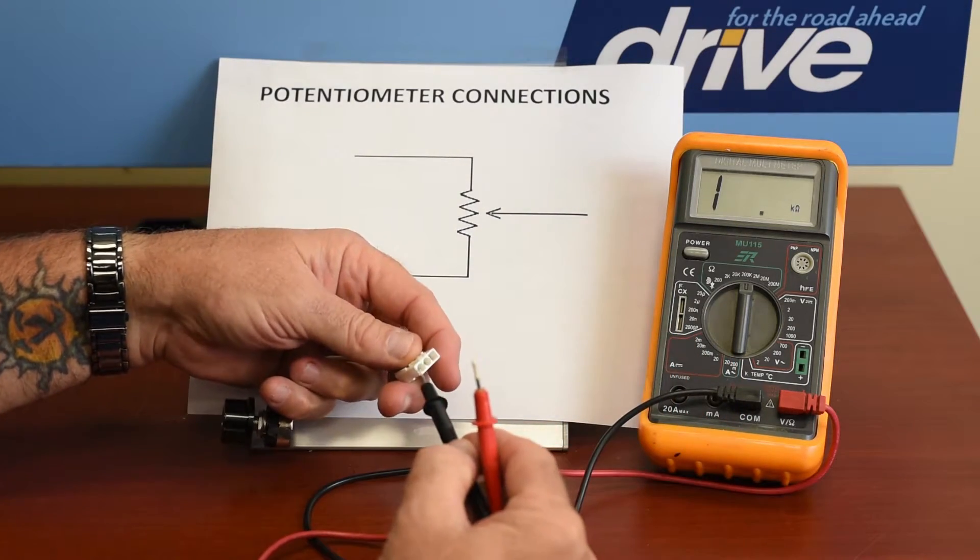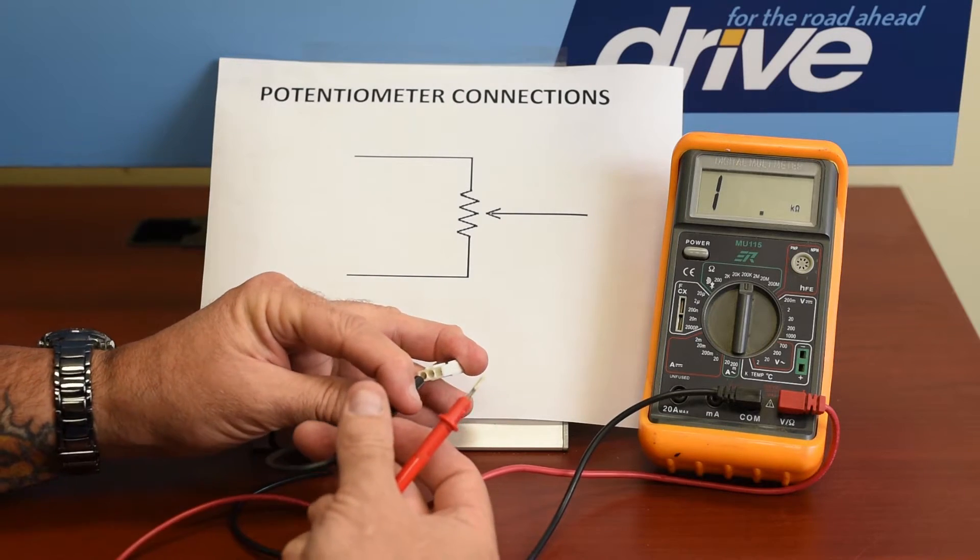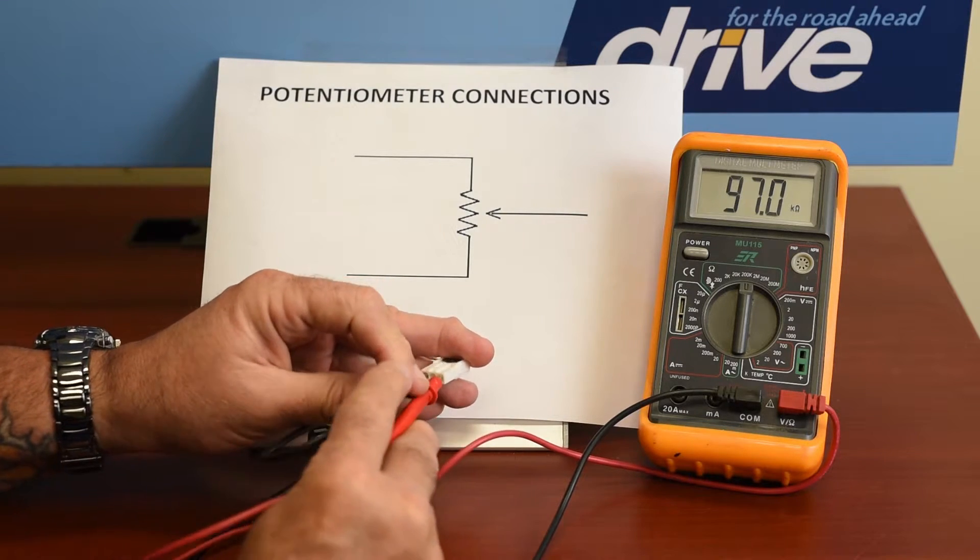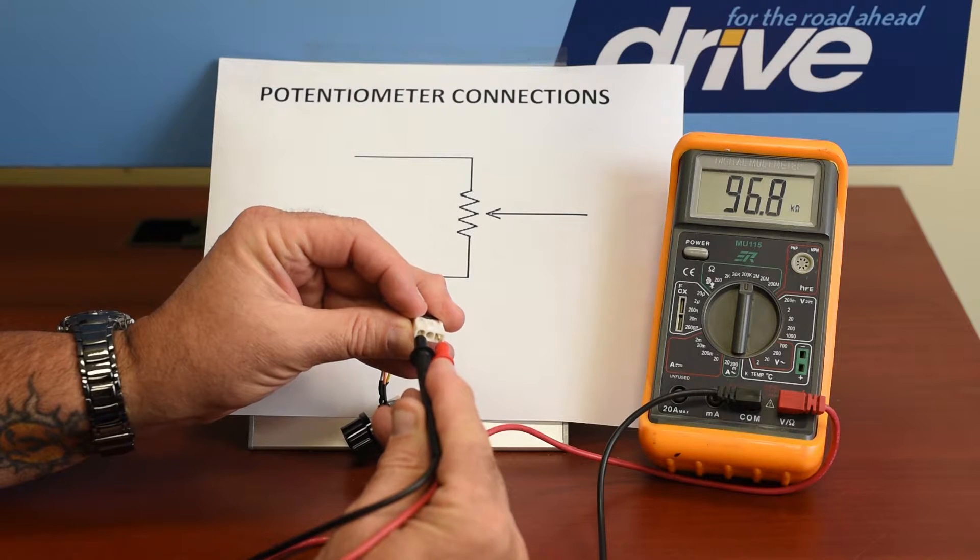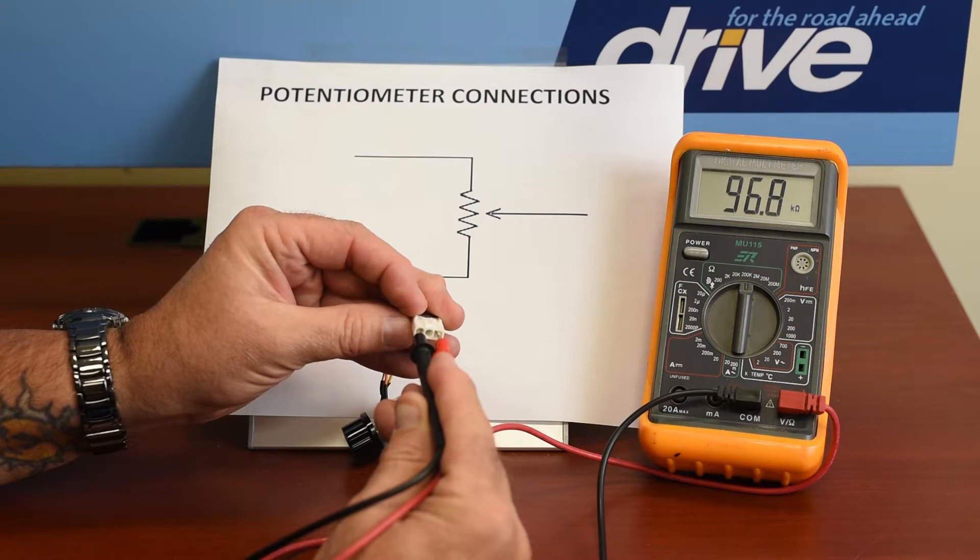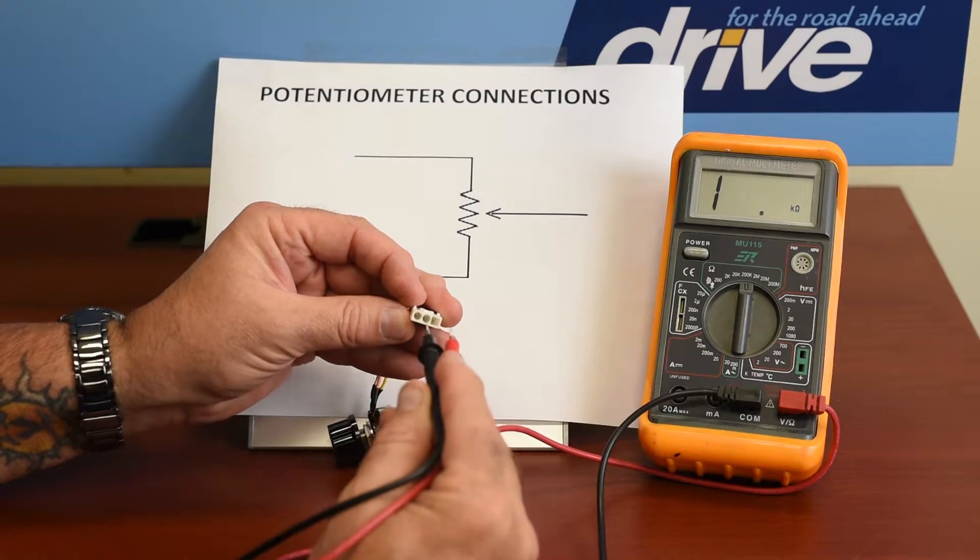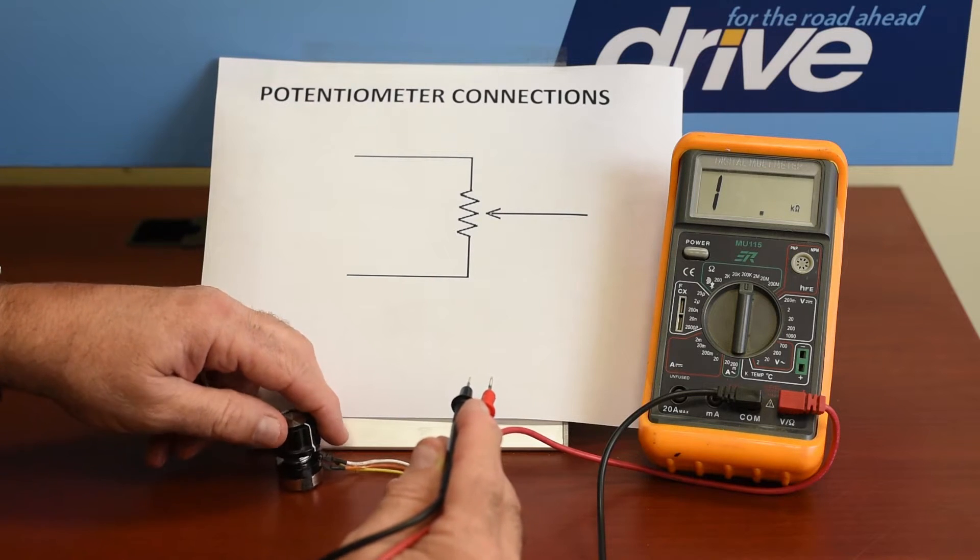Then we go from the outside to the other outside on the connector. And we have 96.8k, that's 96,800 ohms. And that's within 10%, so that tells us that so far it's looking pretty good.